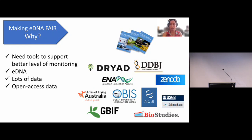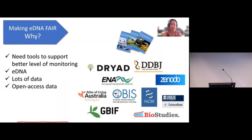So where do those data go when studies are published? Species occurrence data and sequencing data are often on open access platforms, but in various locations — for example, Dryad, ENA, GBIF, and so on. To find them, we need to look into individual papers, find the data, find out what formats they are, because formats are very different between studies. Collating them together is a big challenge and takes a lot of time. So basically, at this moment, eDNA data is unfair — not interoperable and not reusable.